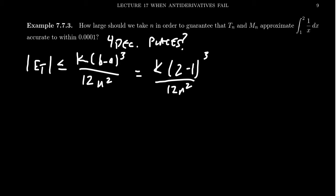We don't know what n is. That's what we're trying to figure out. Let's think about this k for a second. Remember, the bounds here, this k is supposed to be a bound on the second derivative on the interval 1 to 2.